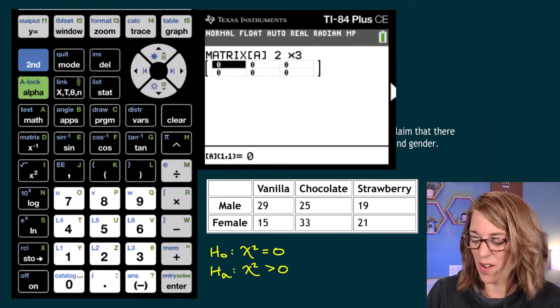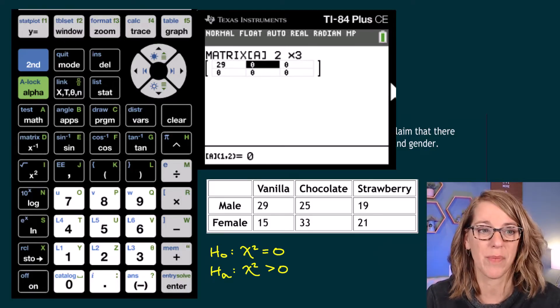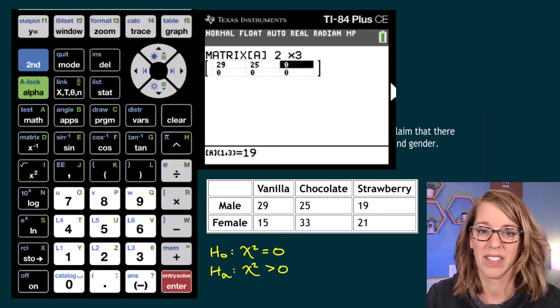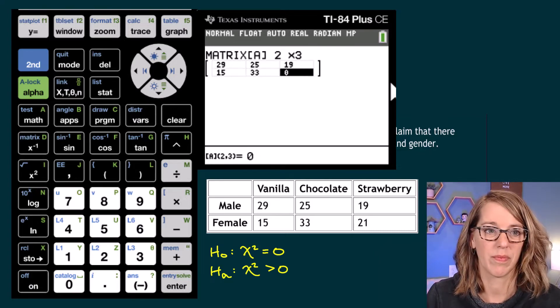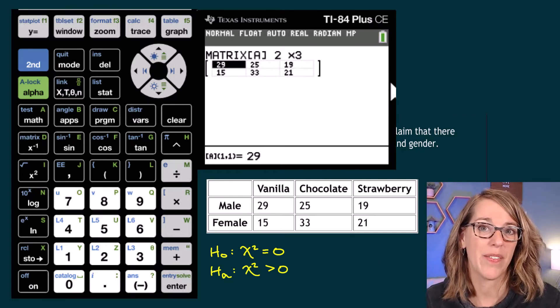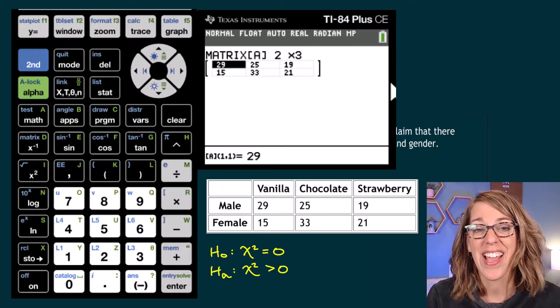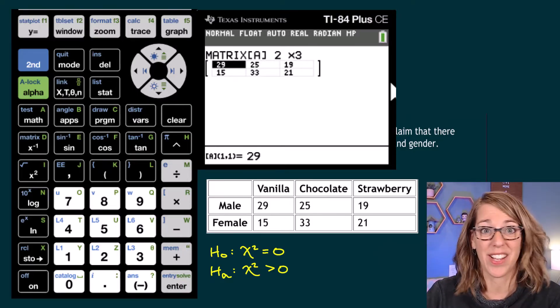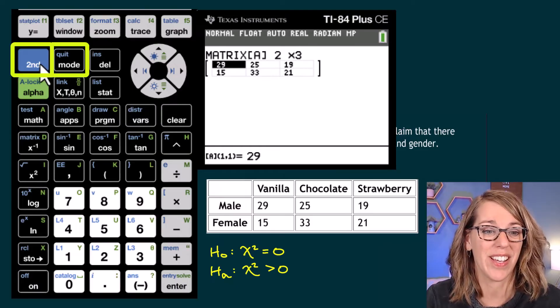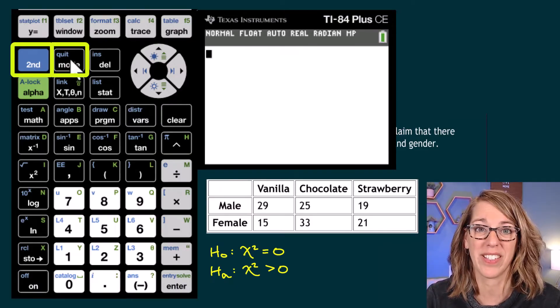Let's go ahead and put our data in now. I'm just going to type my numbers in, followed by enter. And now I've got my data there, my observed values in matrix A. I'm ready to run the chi-square test. That's all I need to do for the data. So I'm going to quit. So second followed by quit.